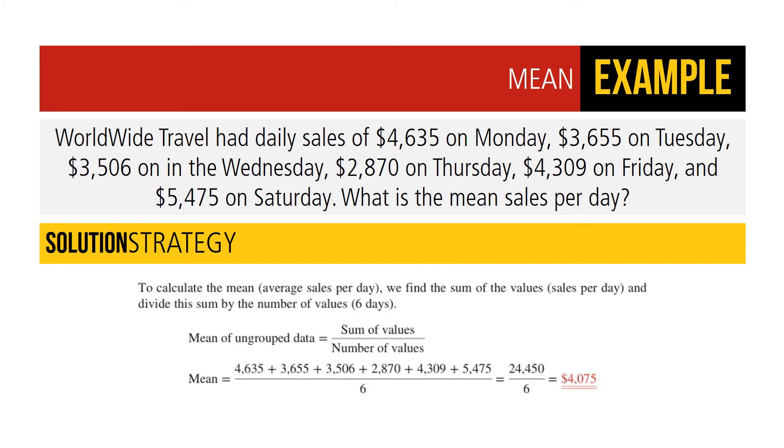To calculate the mean or average sales per day, we find the sum of the value of sales per day and divide this number by 6. You can see that we add up each of the sales figures per day to get us a total of $24,450 in sales, and then we divide this by 6, which is the number of values. This gives us a mean of $4,075 per day.